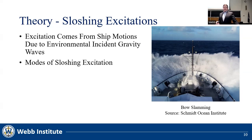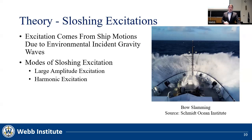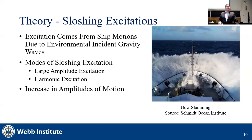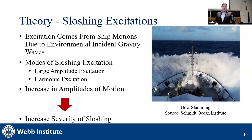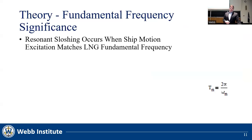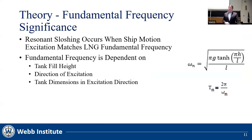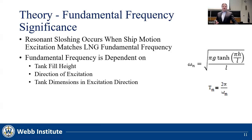Excitation is imparted on the tank through ship motions from environmental incident gravity waves. This can be caused by two different modes: large amplitude excitation, such as hull slamming, or harmonic excitations from harmonic motions of the vessel. When there is an increase in the amplitude of motion, there is an increase in the severity of sloshing. Resonant sloshing occurs when ship motions match the LNG fundamental frequency. I focused on roll motions as a starting point. The fundamental frequency is a result of the fill height of the tank and the length of the tank in the direction of wave motion.